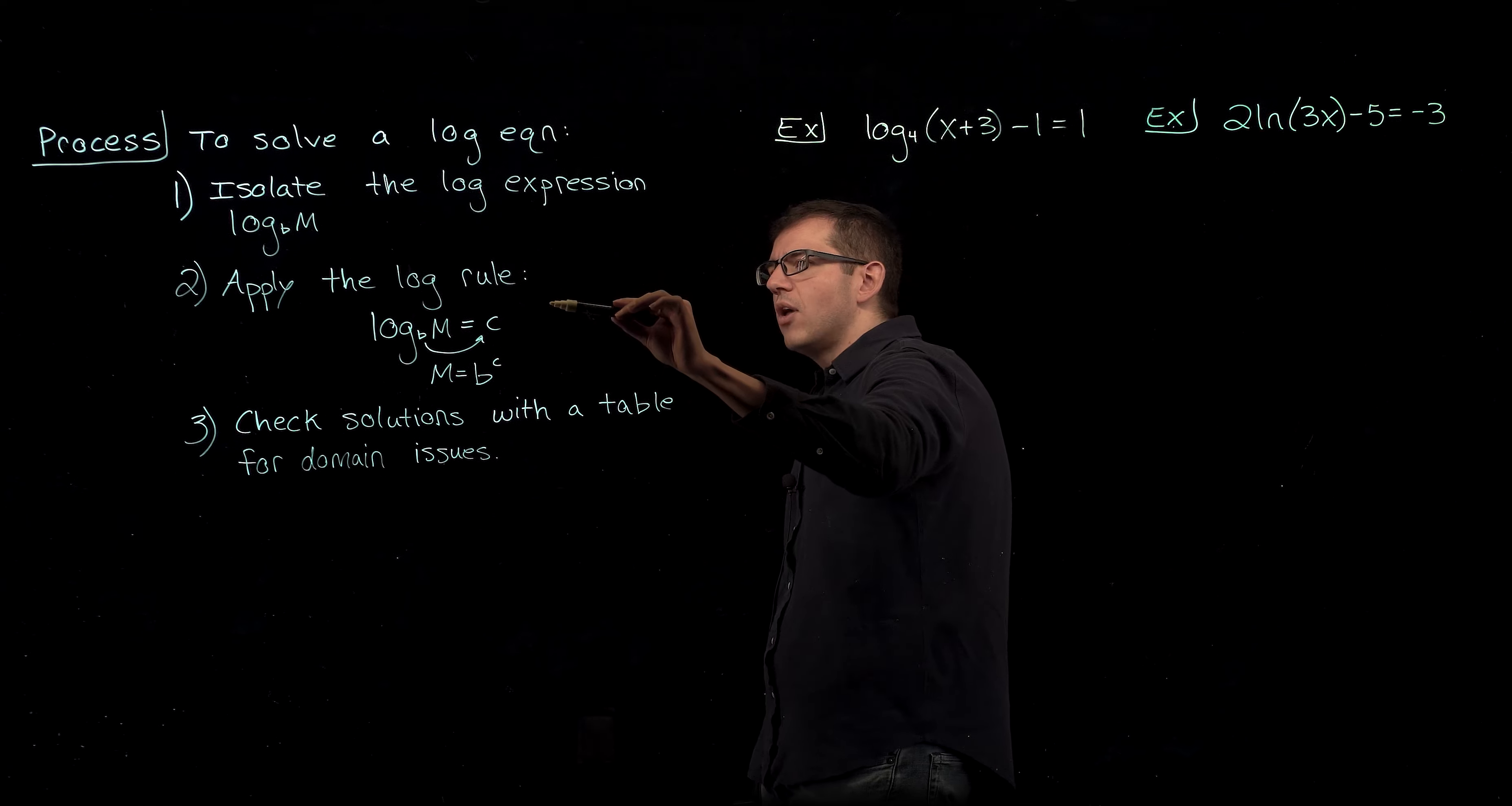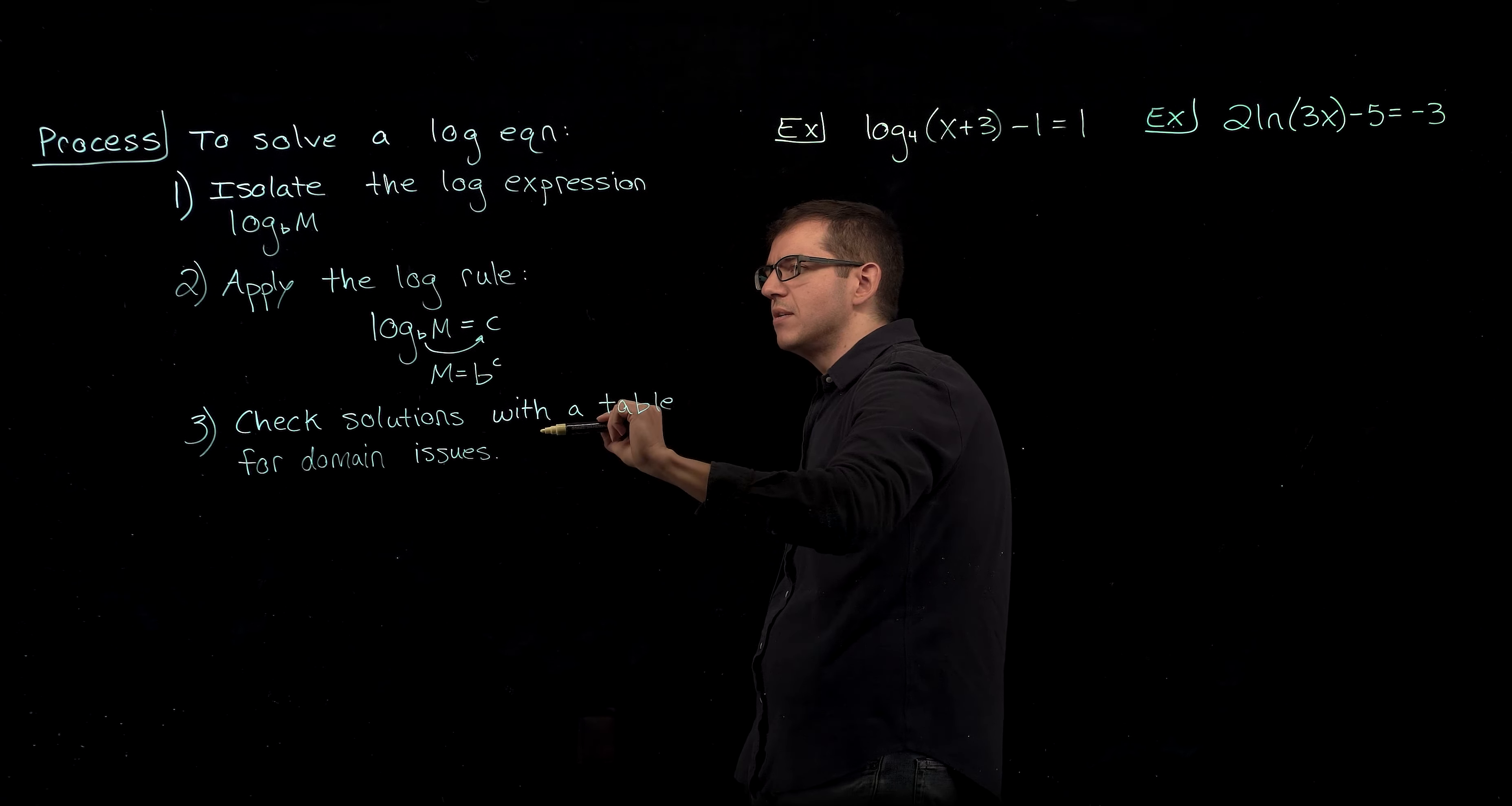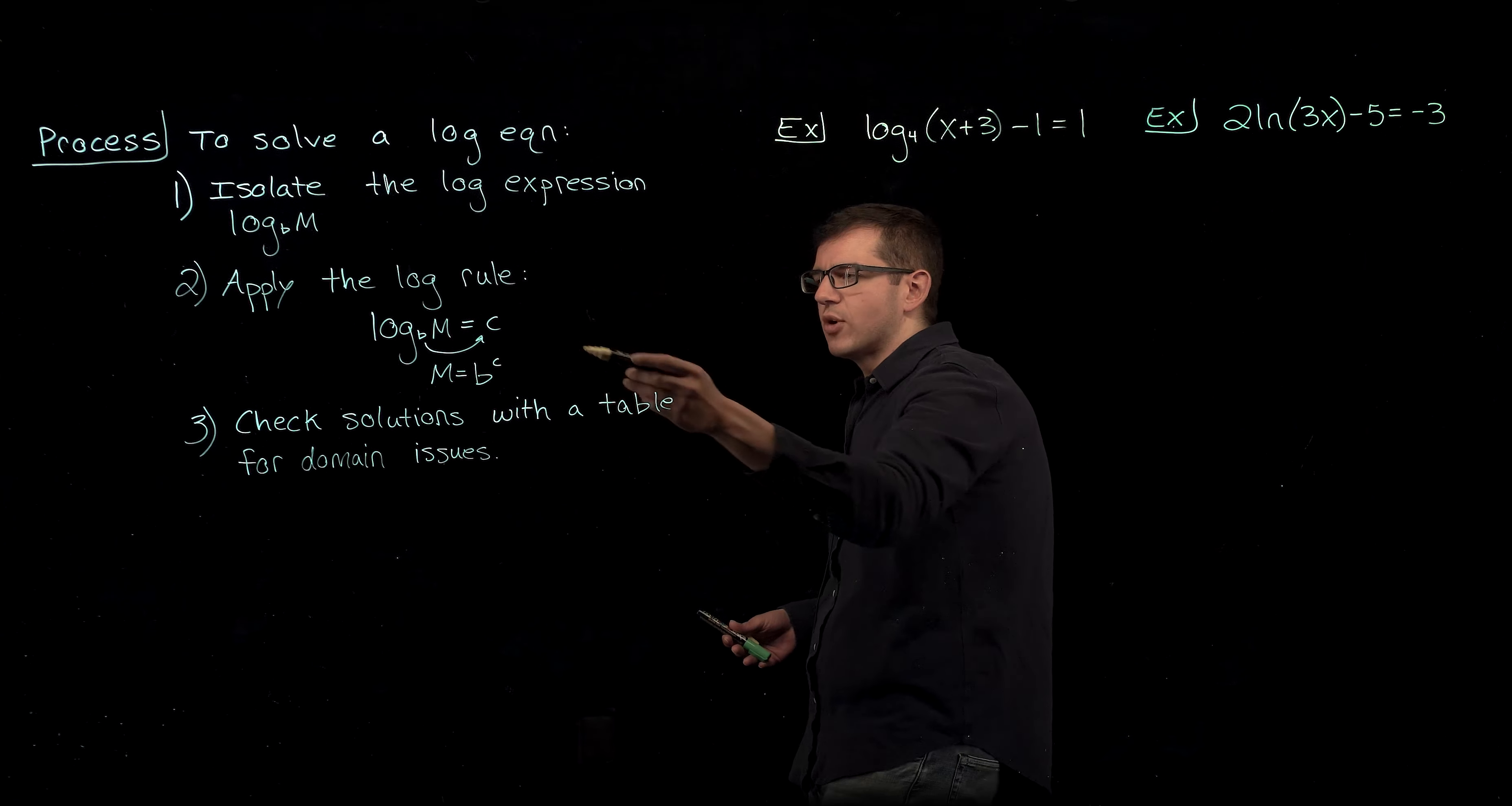From here we're going to apply our log rule that says we can take the base of our log and shift it over with this arrow to the base of the other side, giving us m equals b to the c. If you prefer, you can also raise each side of the equation with a base of b and still get the same result. Either method is perfectly fine, this is more of a shortcut.